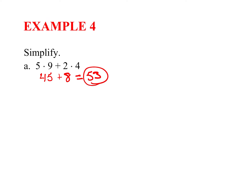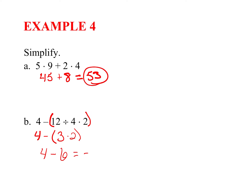Next, we have 4 minus 12 divided by 4 times 2. Working division and multiplication from left to right first: 12 divided by 4 is 3, then 3 times 2 is 6. So we have 4 minus 6, which gives us negative 2.